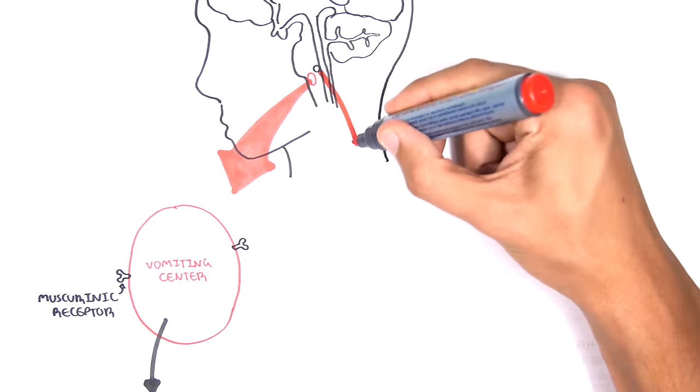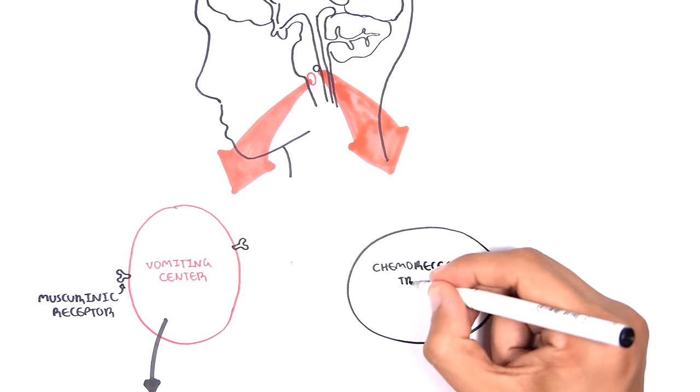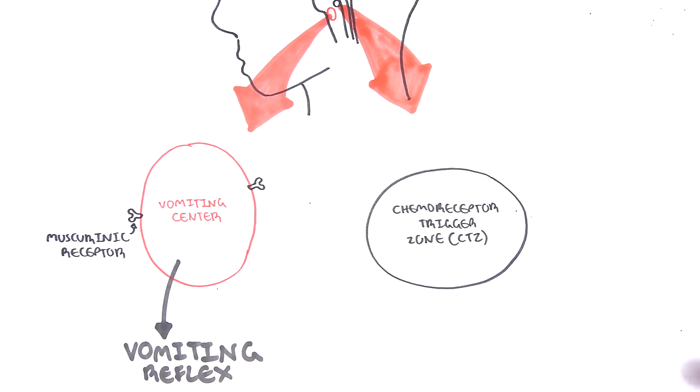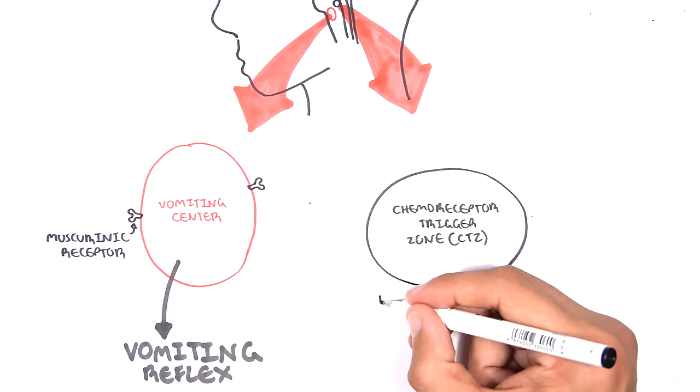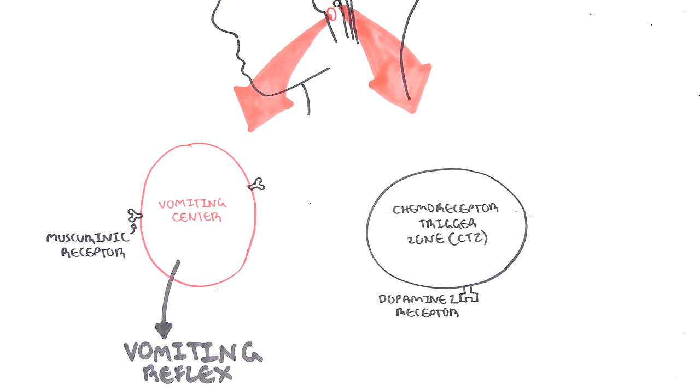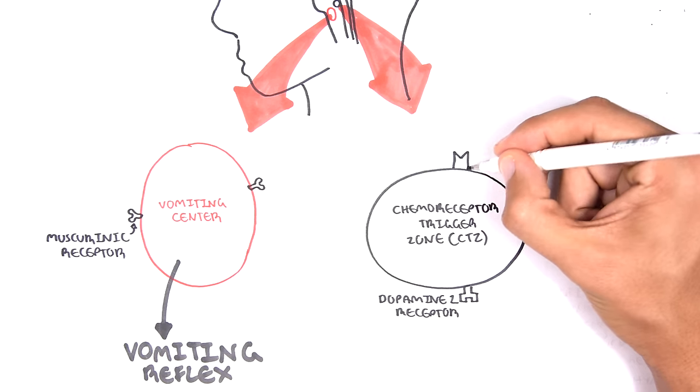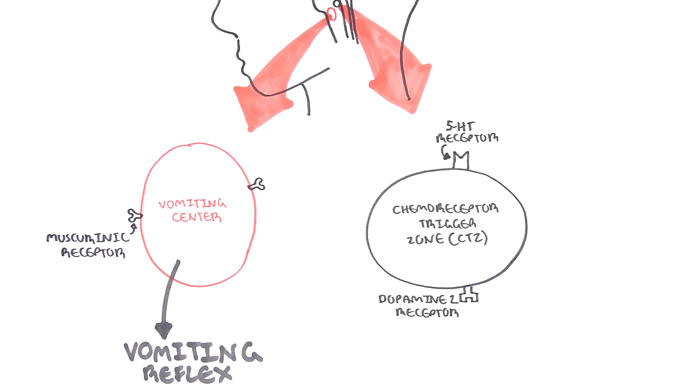Close to the vomiting center, also near the medulla oblongata of the brain stem, is another area called the chemoreceptor trigger zone, or CTZ for short. The CTZ, as the name suggests, gets triggered by chemicals. The CTZ contains a few types of receptors: dopamine 2 receptors and 5-HT receptors. 5-HT is serotonin, so these are serotonin receptors.